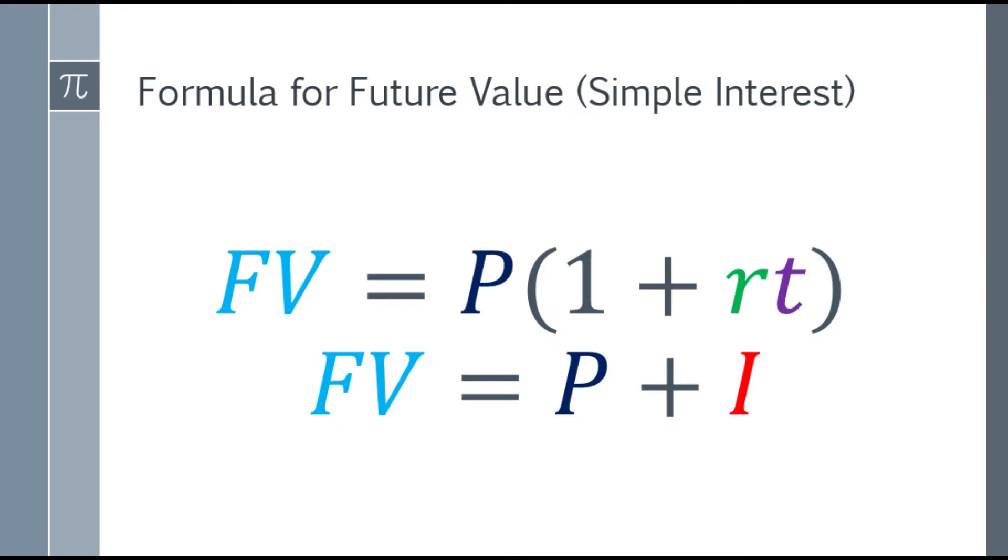So for future value and simple interest, we have two formulas. The first one is future value is equal to the principal times the quantity of 1 plus rate times time.